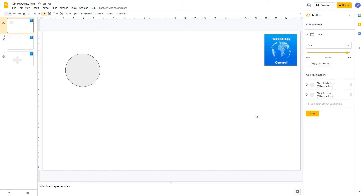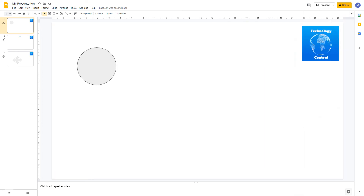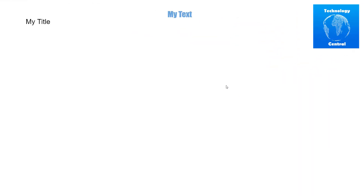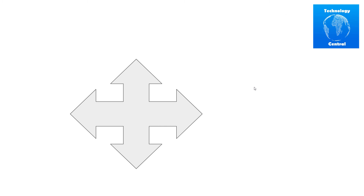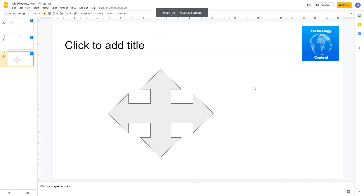Now that we've got our presentation created, let's look at how we can present it. Close this pane and come to Present in the top right-hand side of the screen. Here we have our first slide playing — simply click to progress through the slides. You can see the transition in effect. When you reach the end of the presentation, click Escape to leave.